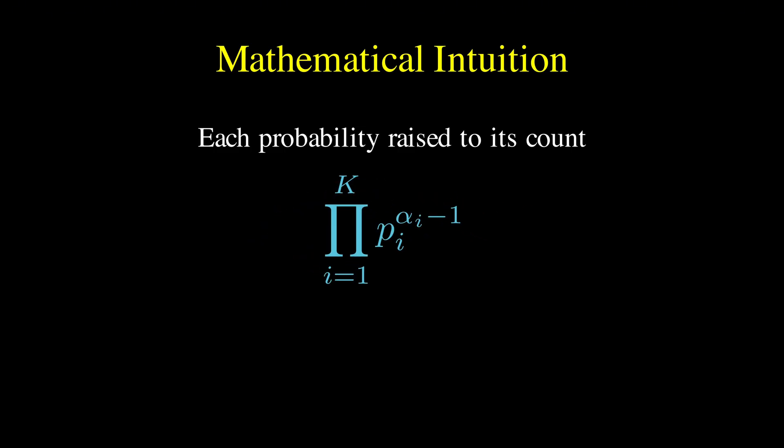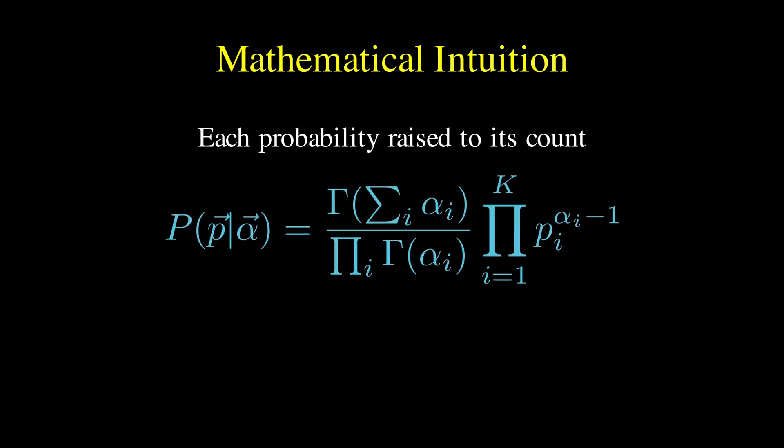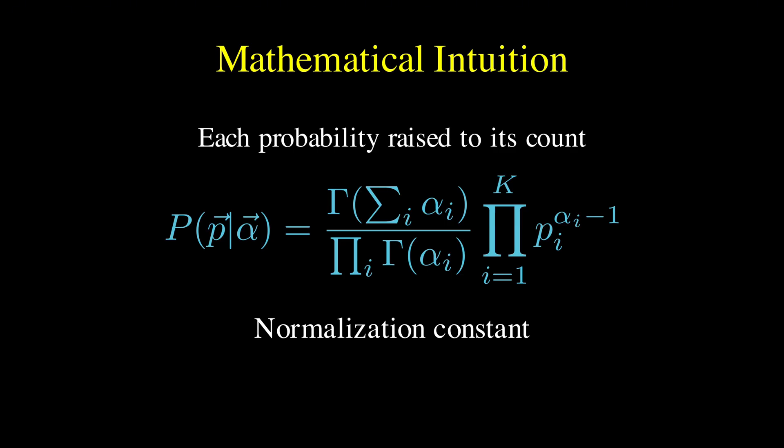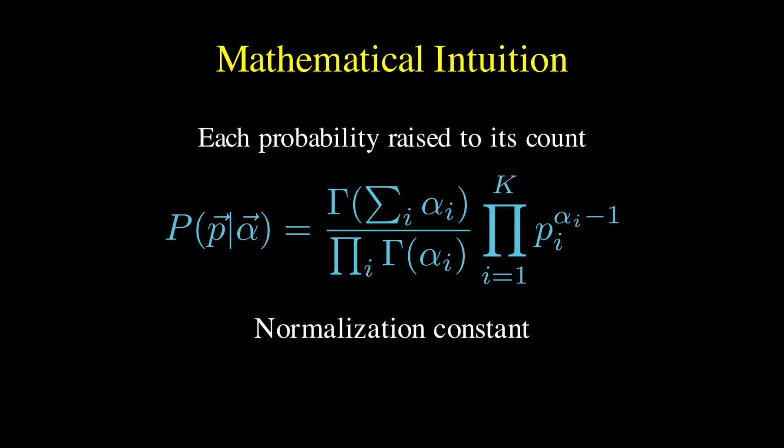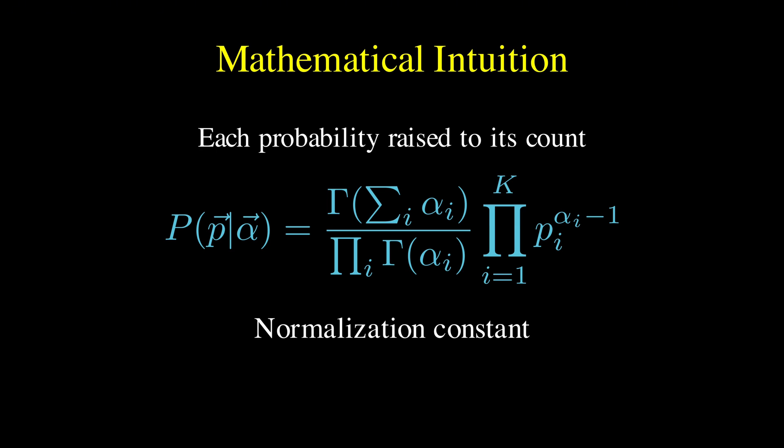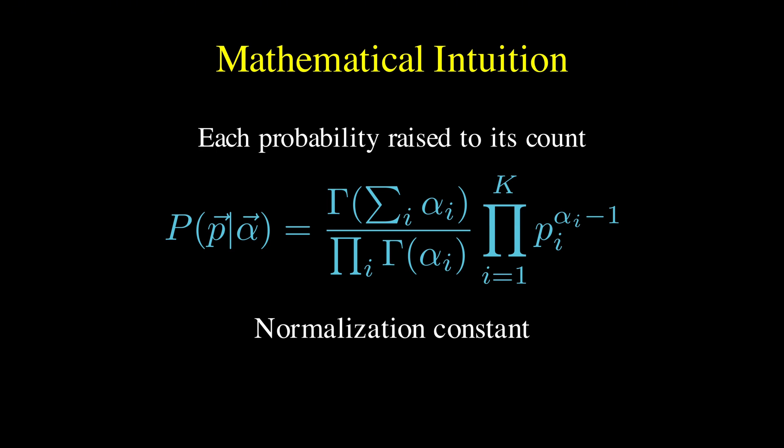This is exactly what happens in the beta distribution too, except now we're doing it for multiple probabilities simultaneously. The gamma functions that appear in the normalization constant might look intimidating, but they're just there to ensure that when you integrate over all possible probability vectors that sum to 1, you get a total probability of 1, which is a fundamental requirement for any probability distribution.